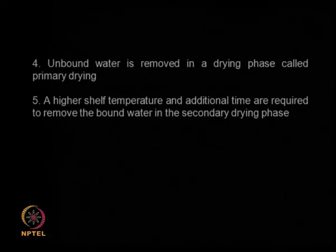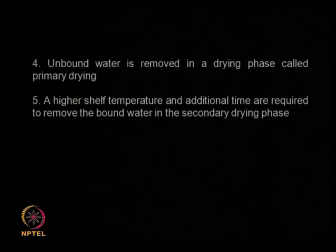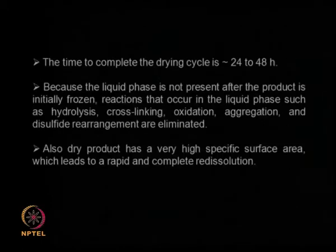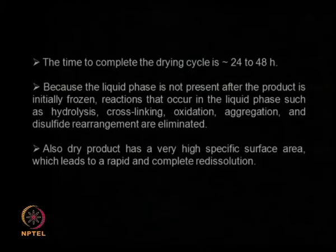In the primary drying phase, by reducing the pressure you operate below the triple point, so solid ice goes into vapor. In the secondary phase, you keep the pressure down but slightly increase the temperature so that bound water gets removed. These are the two steps — primary drying and secondary drying — to remove unbound and bound water respectively. Generally, the time required to complete the drying cycle is about 24 to 48 hours.